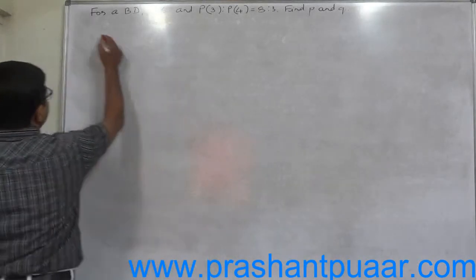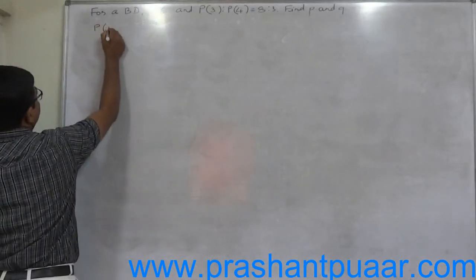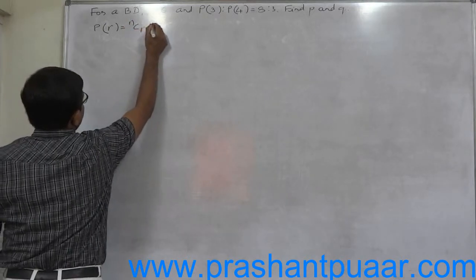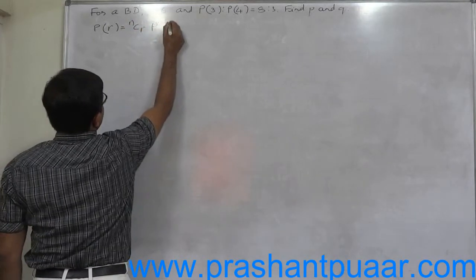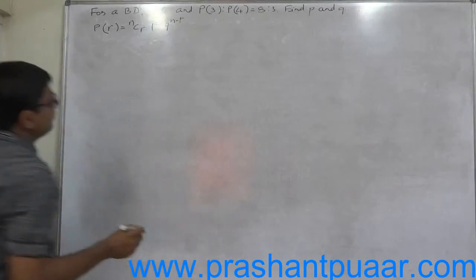Now we know that probability of R successes is NCR into P raise to R into Q raise to N minus R if the data follow binomial distribution.